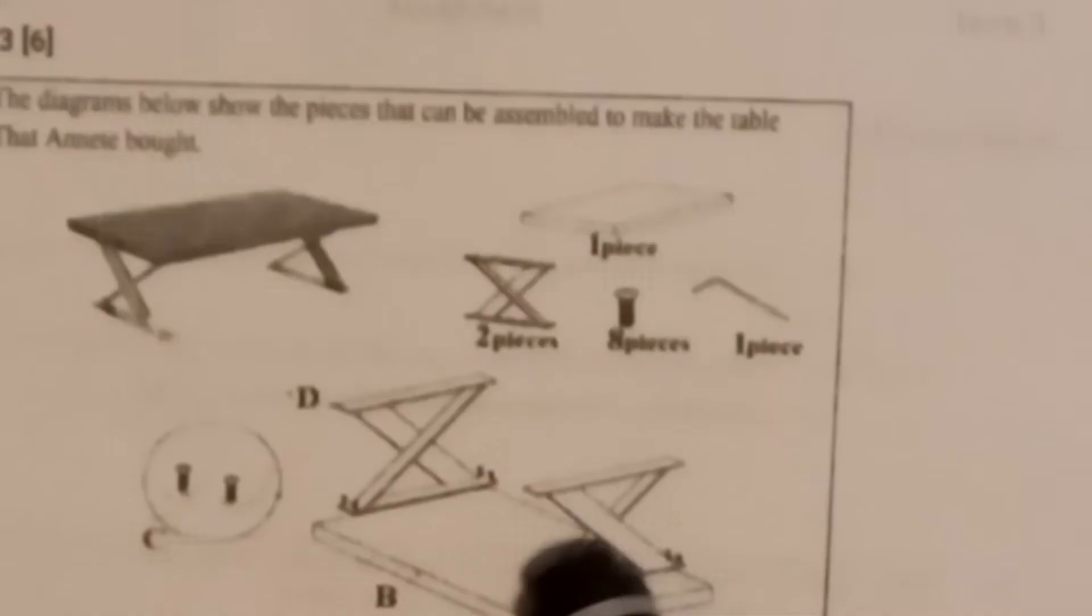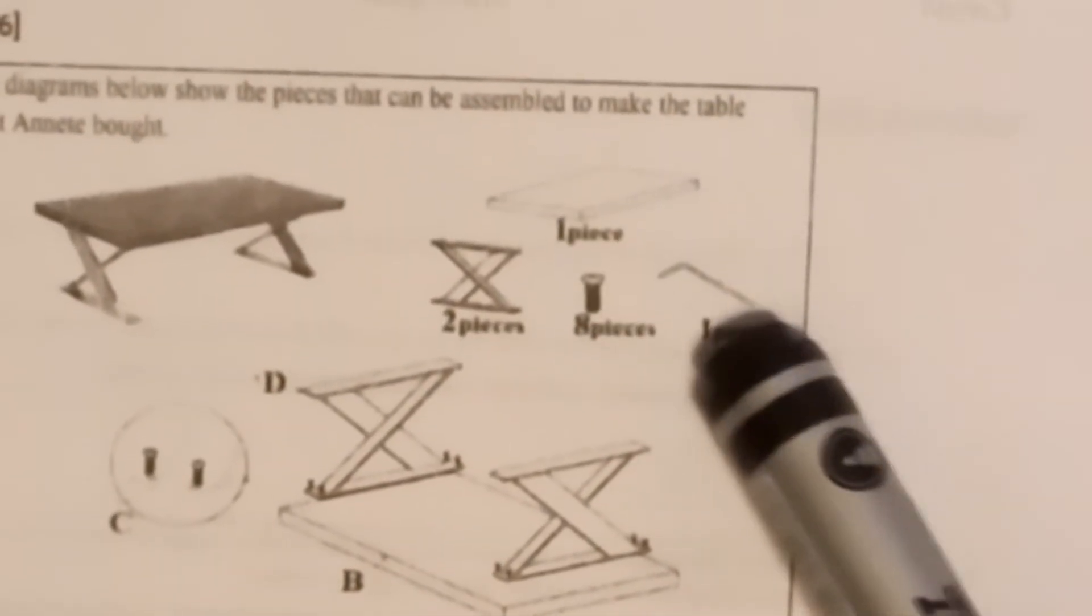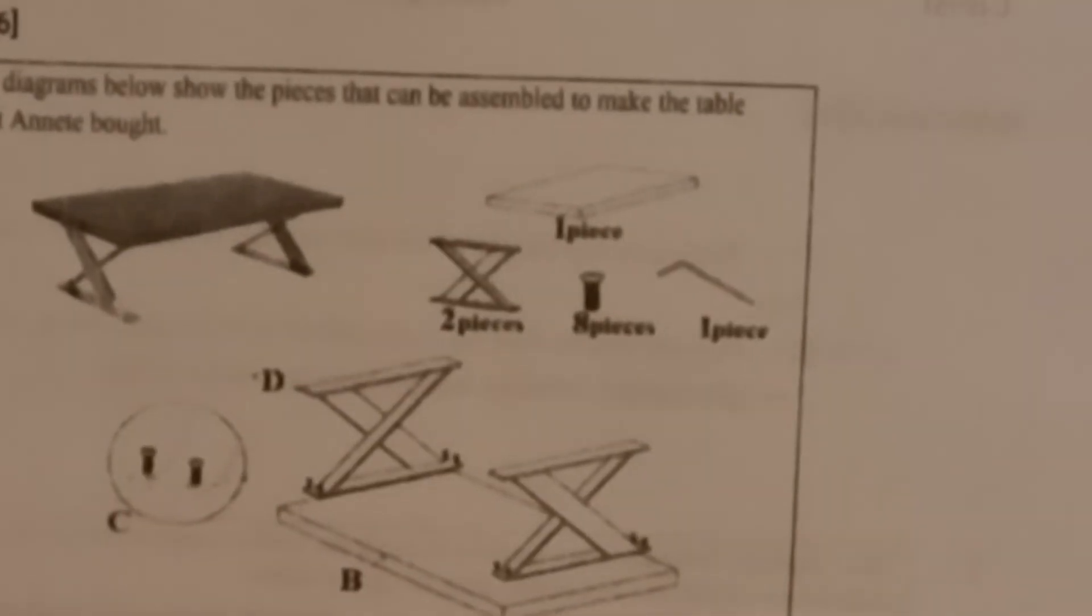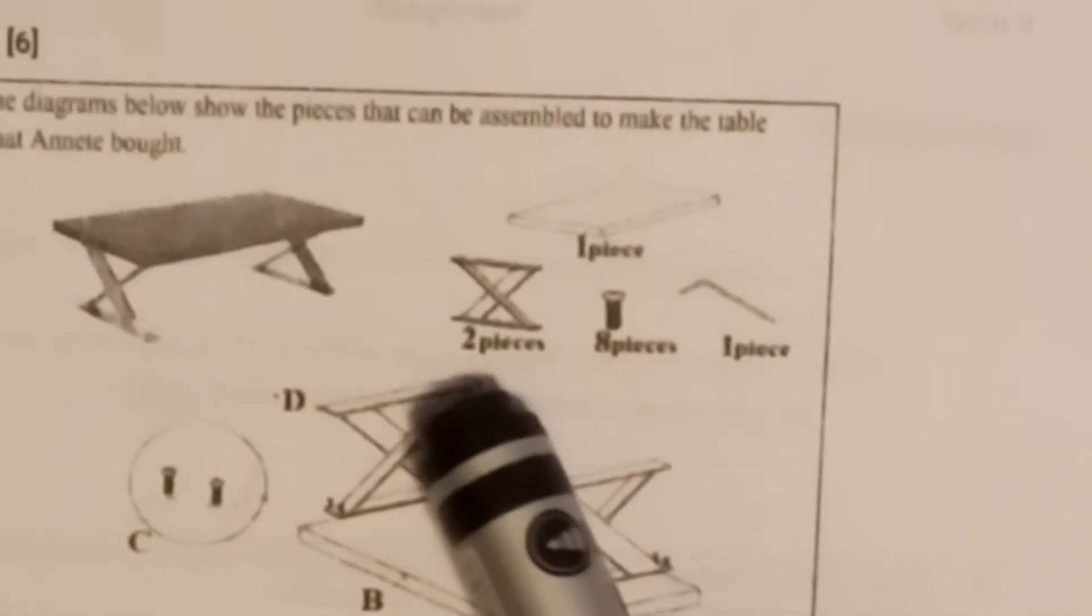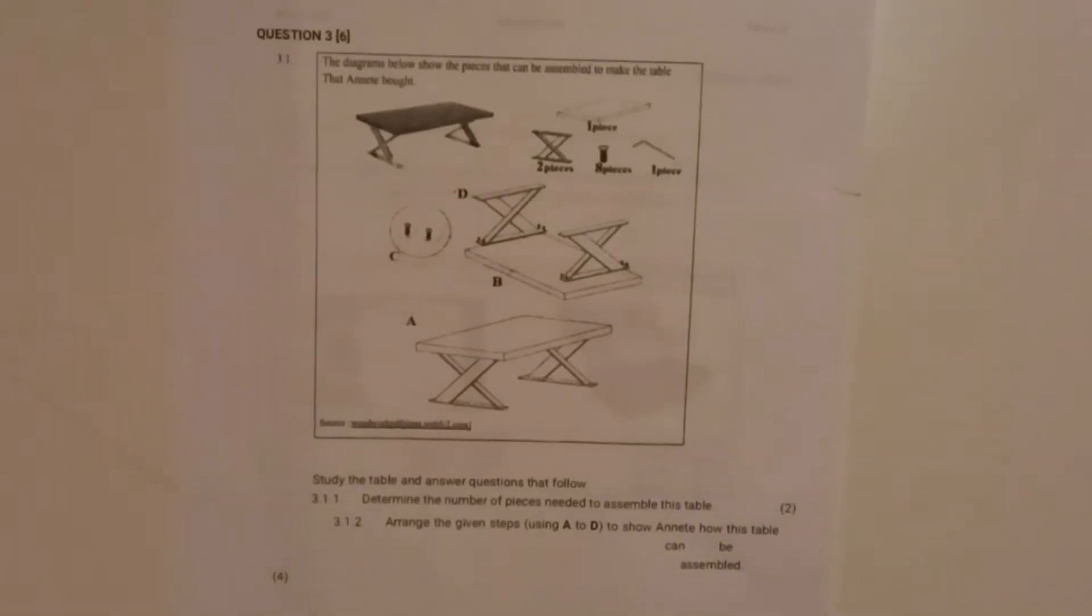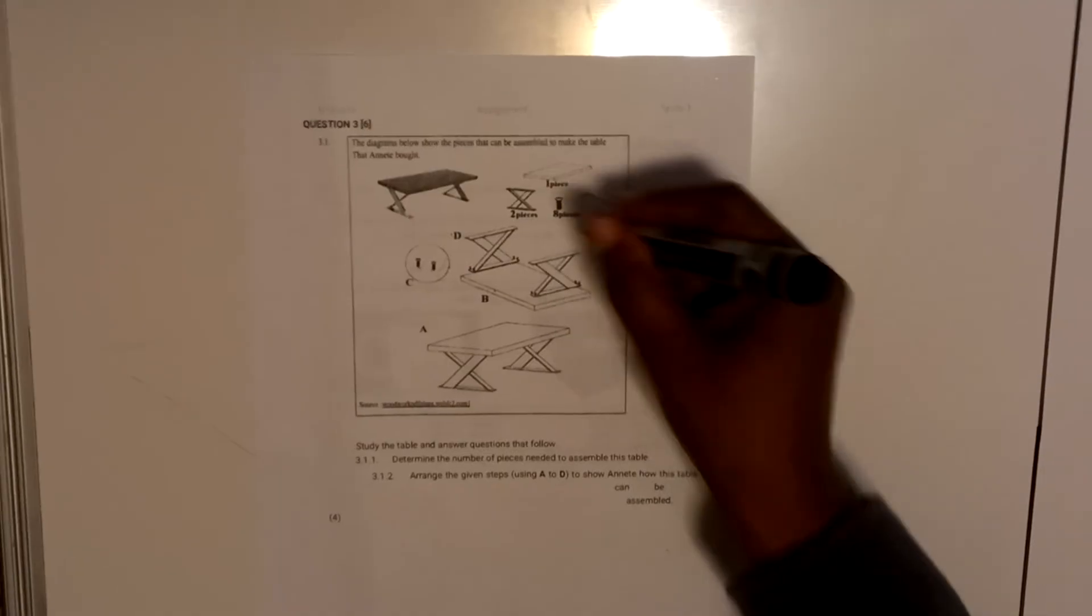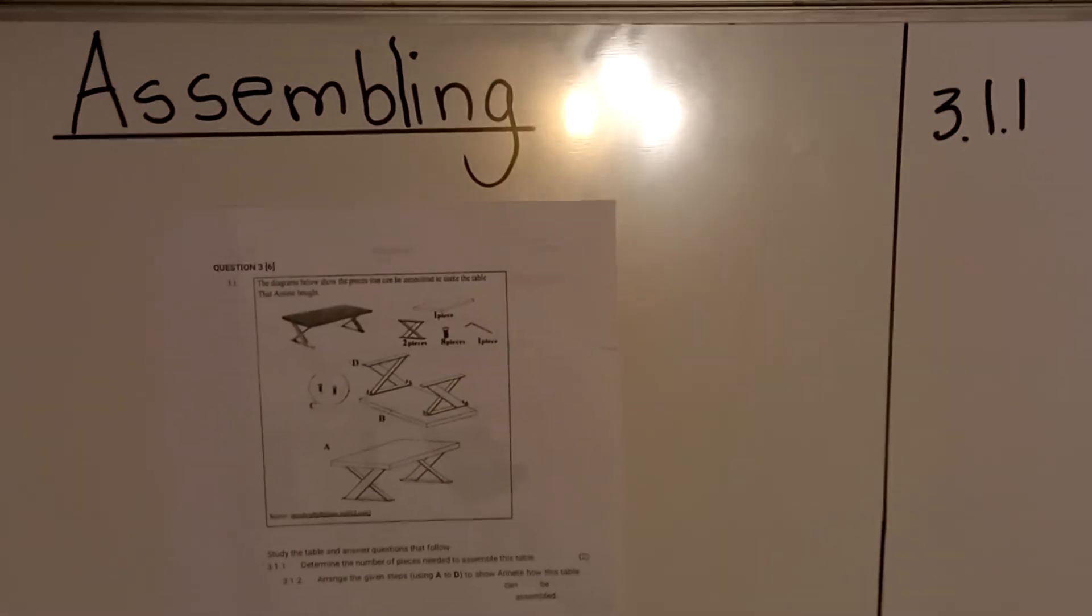When we look at our given diagram, there are two leg pieces, and then the eight screws, there's that one top part, and there's that one connector. So in total you have eight plus two is 10, 11, 12. So the answer for 3.1.1 is 12 pieces - there are 12 pieces altogether. Let's look at the next question.